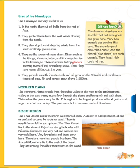Northern Plains. Plains means a large area of flat land with few trees. The northern plains stretch from the Indus Valley in the west to the Brahmaputra Valley in the east. Many rivers flow through the plains and bring rich soil with them. This makes the plains very fertile. This region is the largest producer of food grains and sugarcane in the country. The plains are hot in summer and cold in winter.